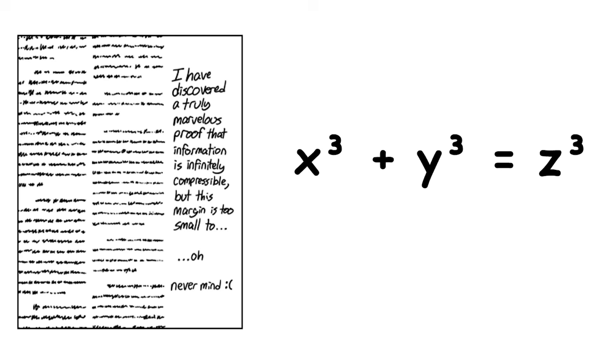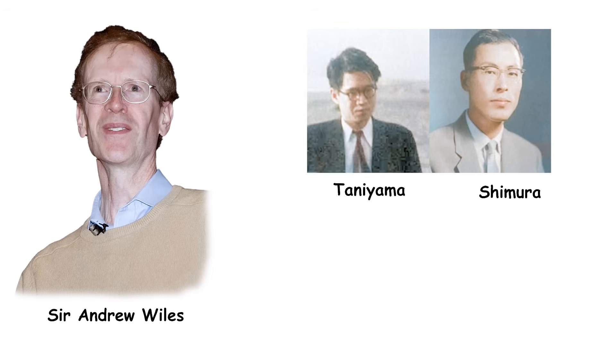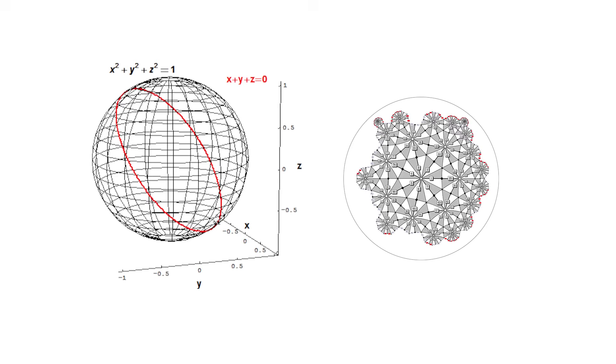For centuries, mathematicians wondered if Fermat really had a valid proof. In 1995, 330 years after Fermat's death, British mathematician Sir Andrew Wiles finally proved Fermat's Last Theorem. He proved it by showing it was a consequence of the Taniyama-Shimura Conjecture. Wiles worked in secret for seven years combining new techniques from algebraic geometry and number theory to try to prove the Taniyama-Shimura Conjecture, and after fixing a flaw in his original proof, he published the corrected proof in 1995.